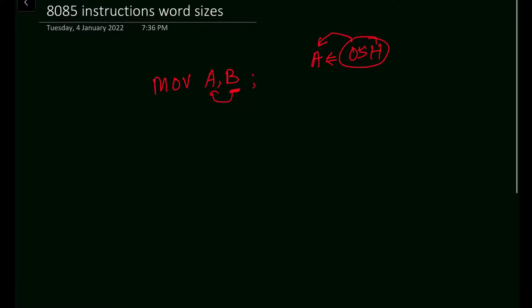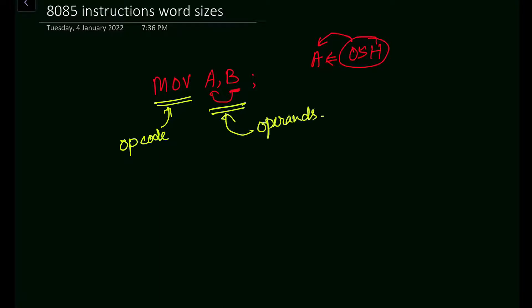In MOV A, B — 'MOV' is the opcode or operation code, and 'A' and 'B' are the operands. The opcode specifies the operation that the microprocessor is going to execute. The operand represents on which the instruction is going to be executed — operands are usually the data, a memory address, or sometimes a register. Basically, operands are the data on which the operation is being performed by the microprocessor.